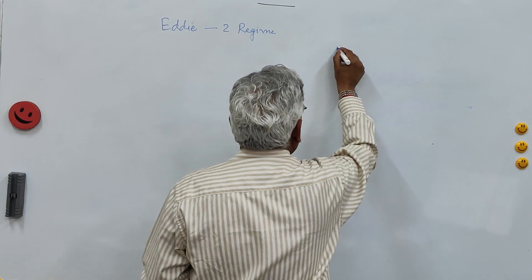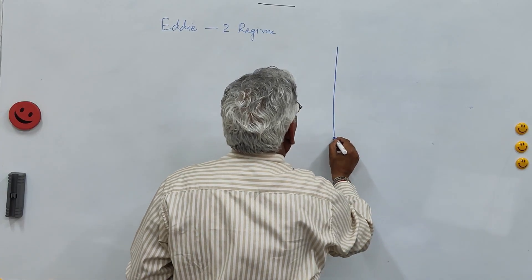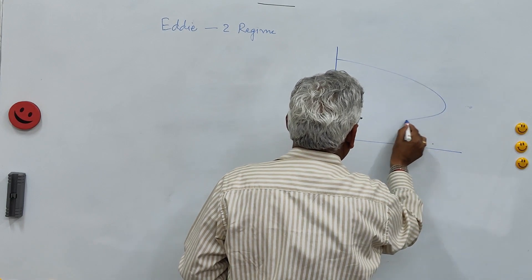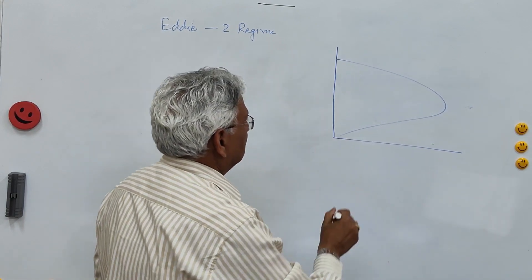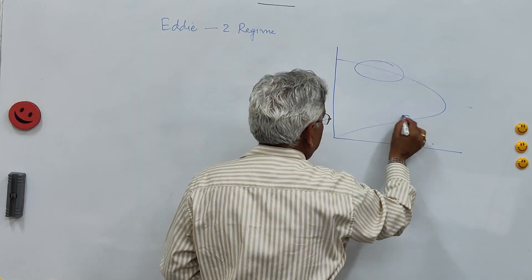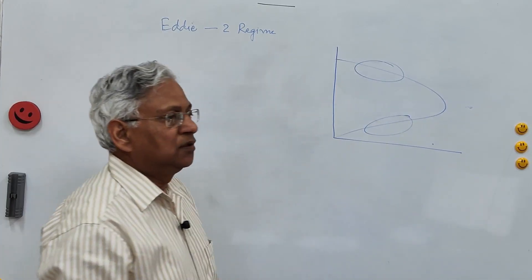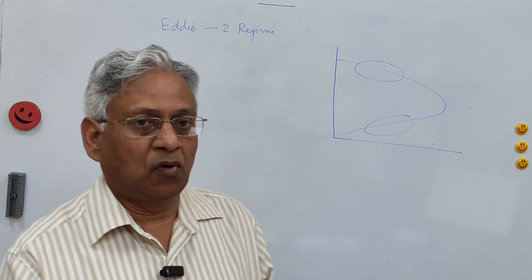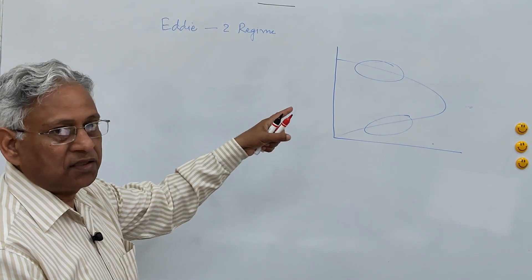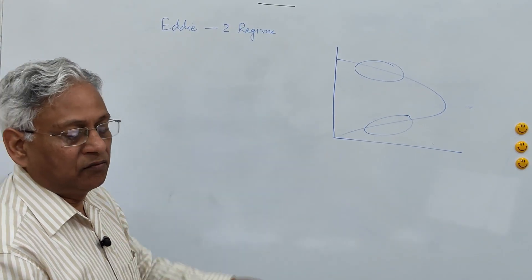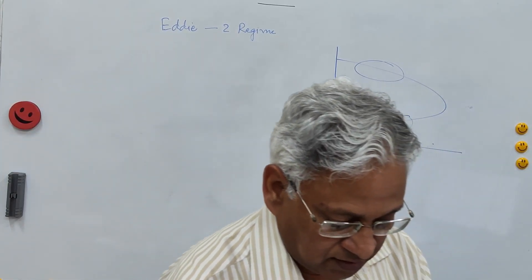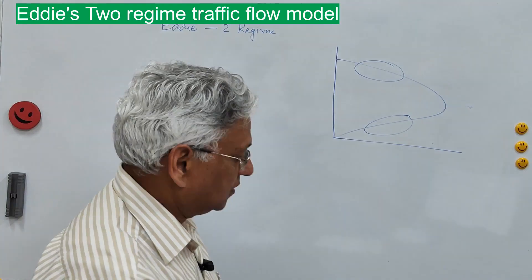If you take a case of a highway and draw a speed-flow diagram, this is uncongested flow and this is congested flow. The two-regime model takes different equations for congested and uncongested flow. Edie was the person who first suggested two models.